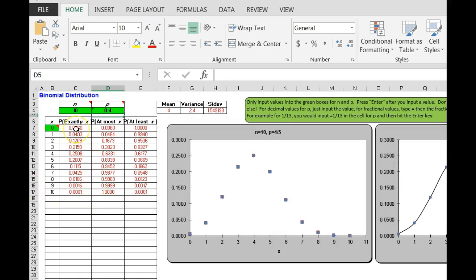Everything changes. It will be these values right here under probability of exactly p. So mine would be 0.006, 0.0403, etc.